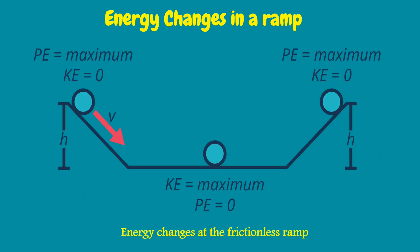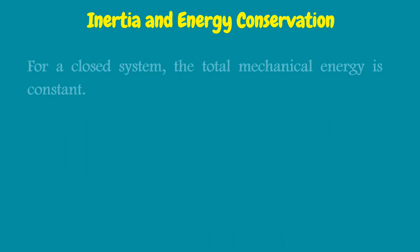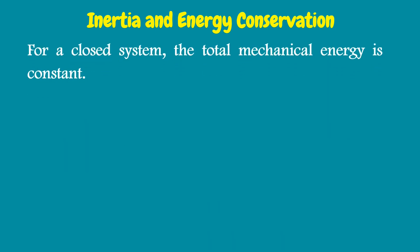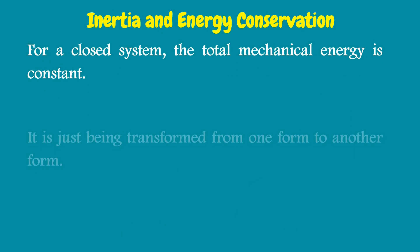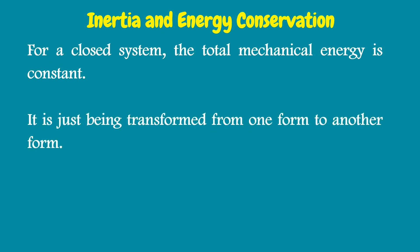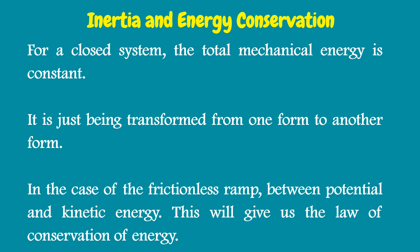How does energy change on a ramp? Potential energy at maximum has no kinetic energy, or zero, and vice versa. For a closed system, the total mechanical energy is constant — it is just being transformed from one form to another. In the case of the frictionless ramp, between potential and kinetic energy, this gives us the law of conservation of energy.